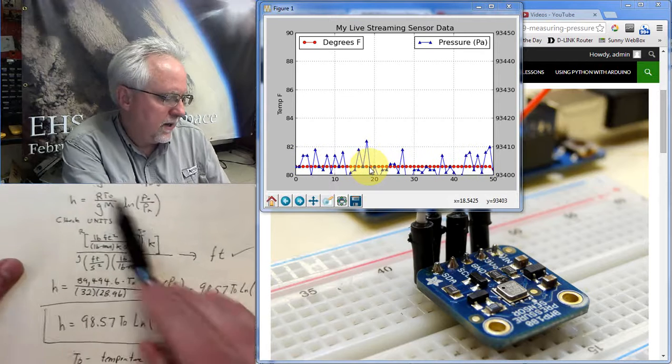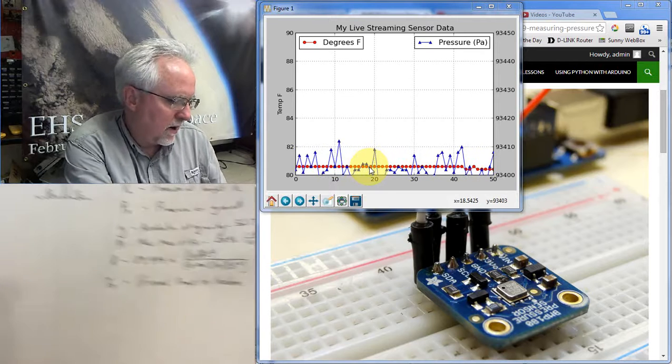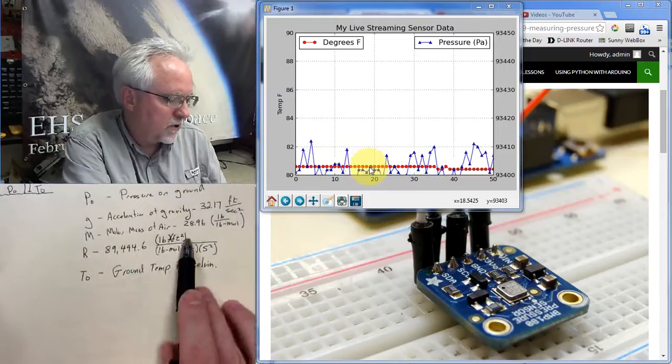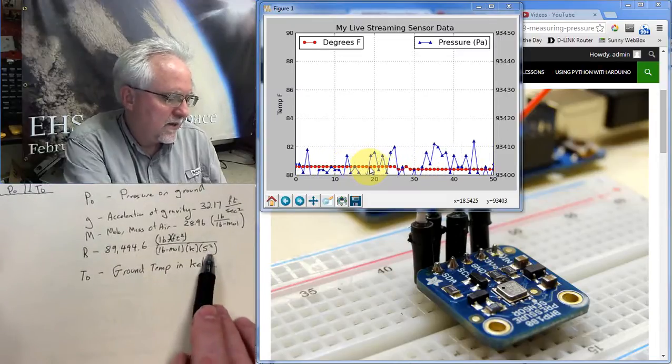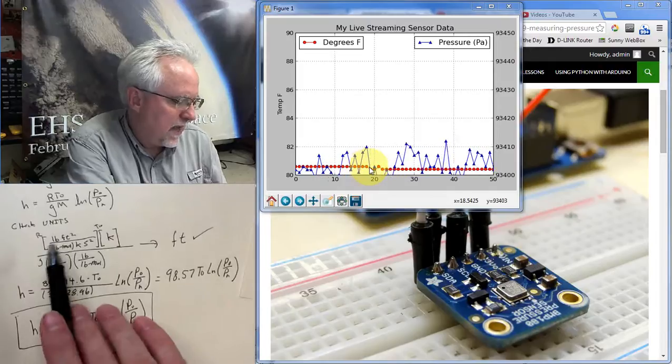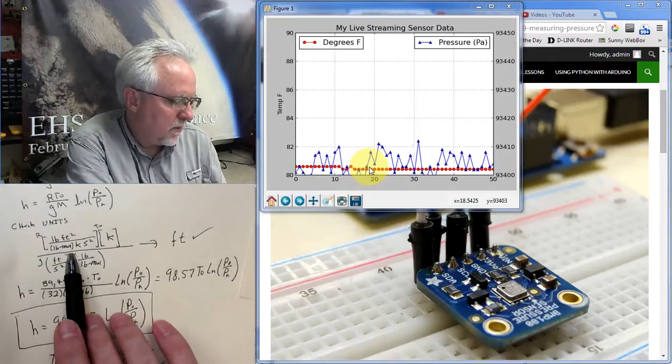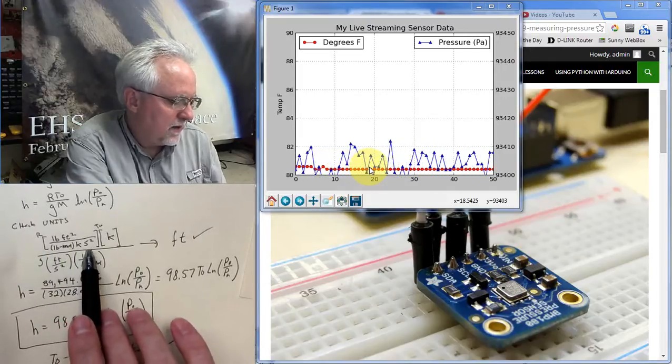Now let's look. What is the unit on R? R is pound foot squared per pound mole degree second squared. So that's pound foot squared, pound mole, degree Kelvin, second squared.